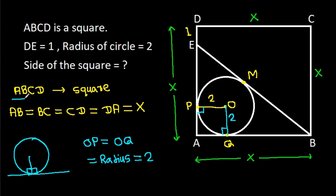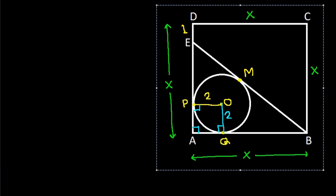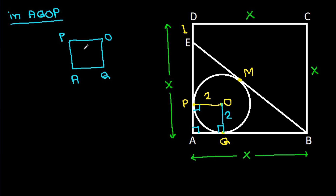ABCD is a square, so this angle will be 90 degrees. Now in quadrilateral AQOP, this angle is 90 degrees, this angle is 90 degrees, this angle is 90 degrees, and this angle is 90 degrees. So all four angles are 90 degrees, and OP equals OQ equals 2. That means AQOP is a square.